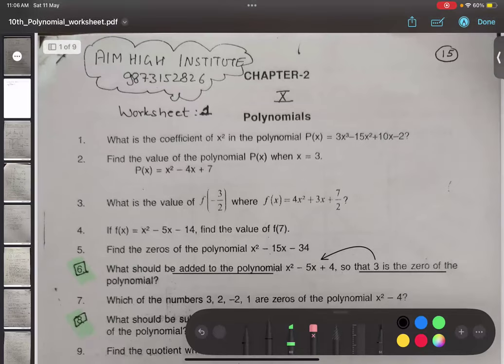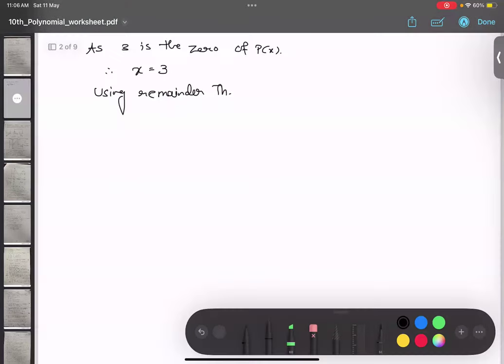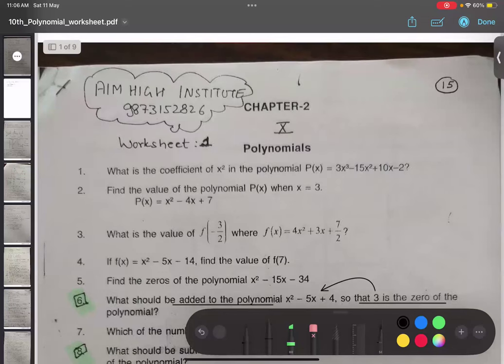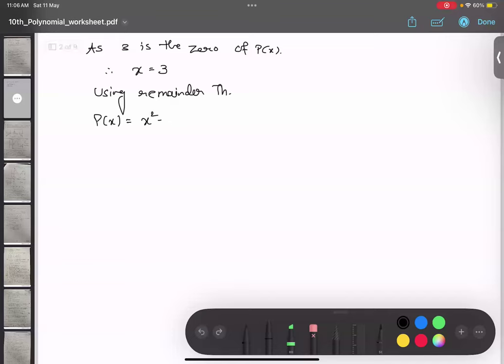So, our polynomial is x² - 5x + 4. Using remainder theorem, when I put 3, P(3) equals 3² - 5(3) + 4. We studied this in class 9 also. 9 - 15 + 4, so 9 + 4 is 13, 13 - 15 is negative 2. So negative 2 is my remainder.